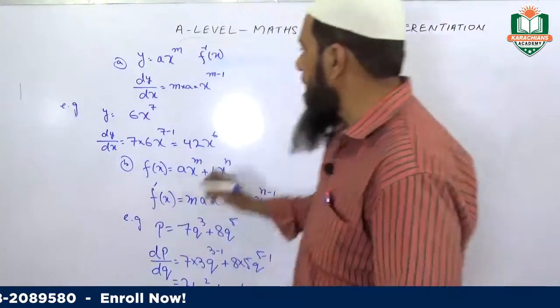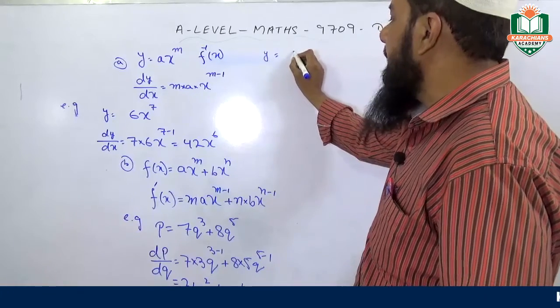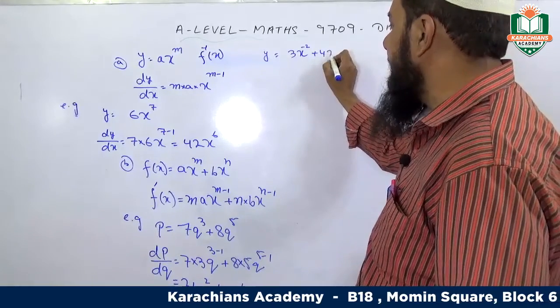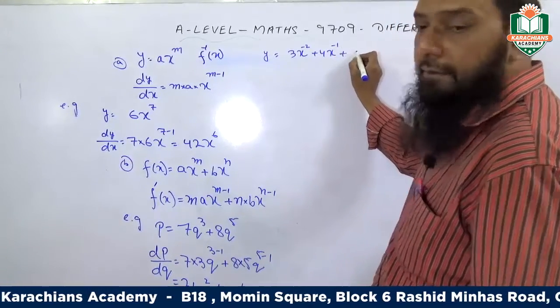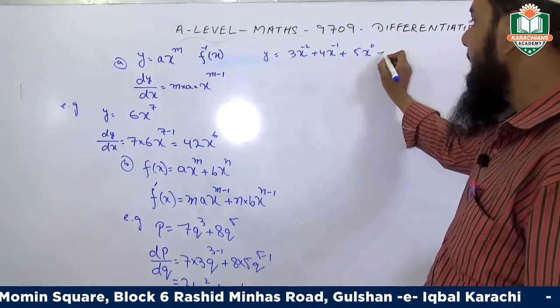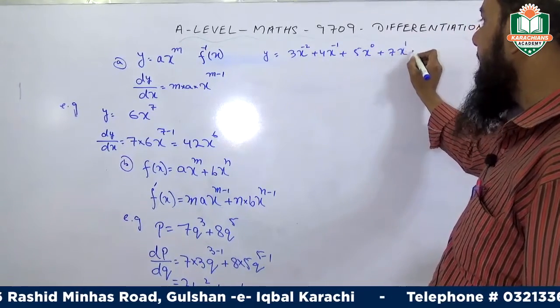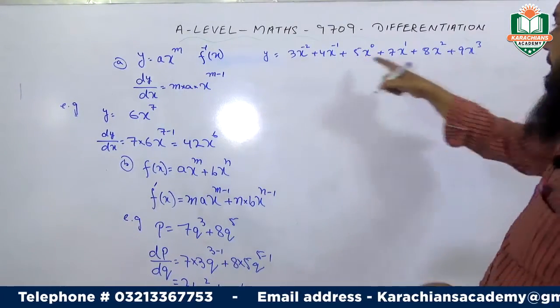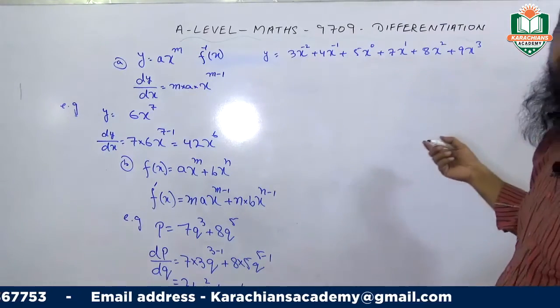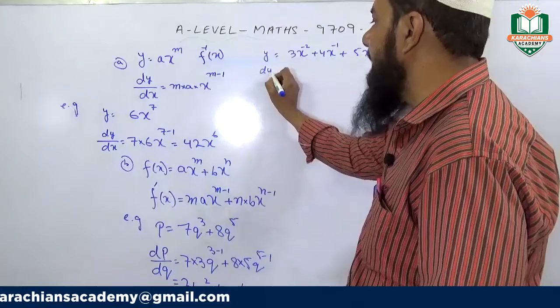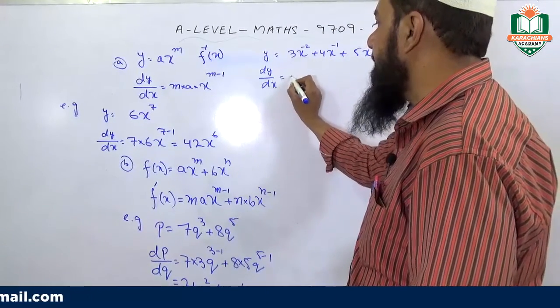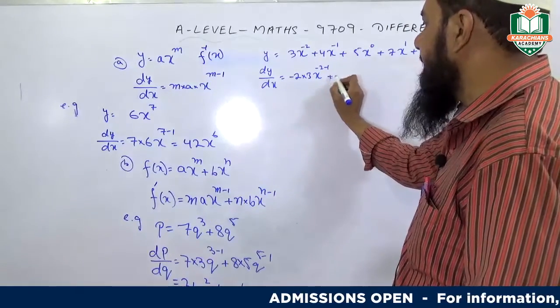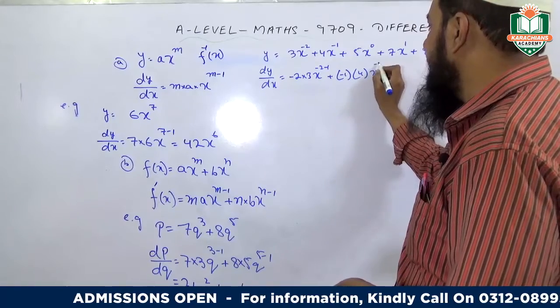Let's suppose y equals 3x^(-2) plus 4x^(-1) plus 5x^0 plus 7x^1 plus 8x^2 plus 9x^3. Now differentiate this polynomial function with respect to x. dy/dx equals -2 times 3x^(-3) plus -1 times 4x^(-2) plus 5 times 0...